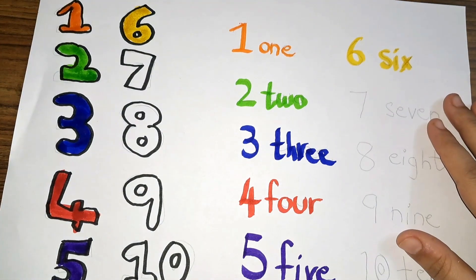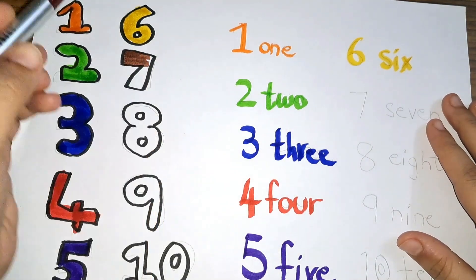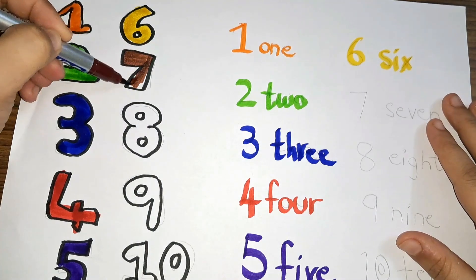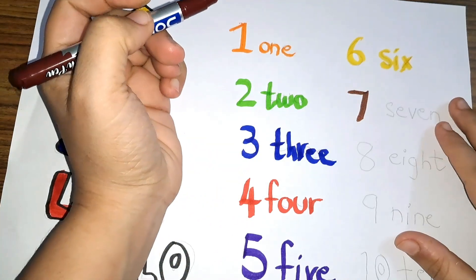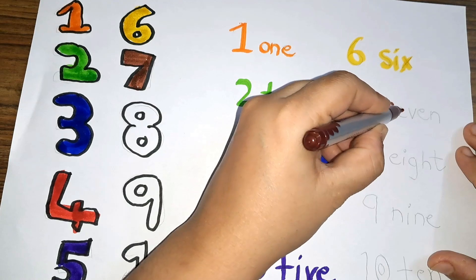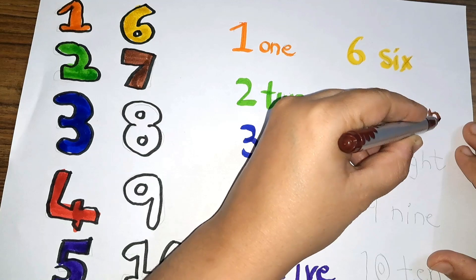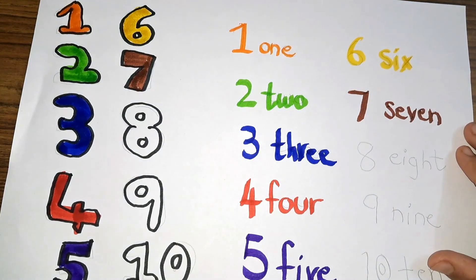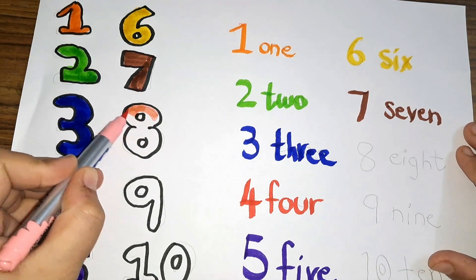Which color is this? Yellow color. And the number is six — what is the spelling of six? S-I-X, six. Then, what comes after six? Seven. We will color it with brown color. Number seven — the spelling of seven is S-E-V-E-N. Then comes number eight — we will color it with light pink color.